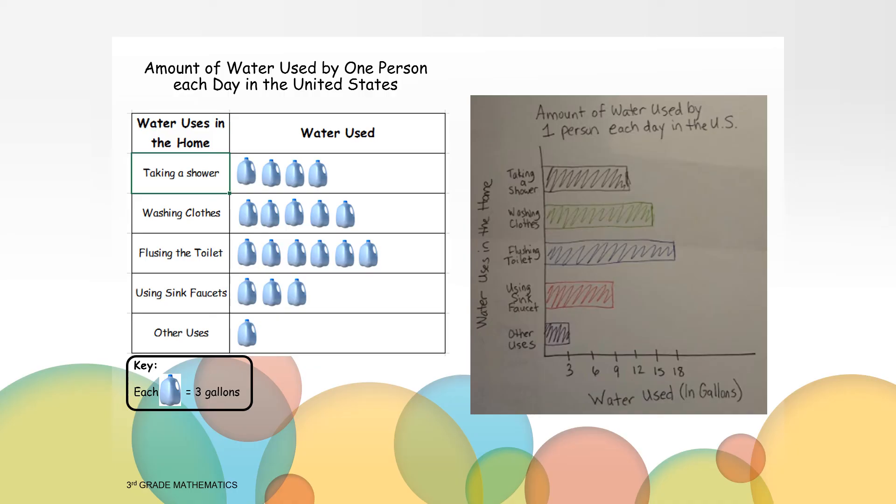Take a moment and compare the pictograph and the bar graph. How are they different? How are they the same? Write a few ideas down or share your ideas with someone that is home with you right now. I notice that they are the same because they share the same information. Also, the length of the bars are similar in length to the number of pictures in the pictograph. I notice that they are different because the bar graph uses bars and the pictograph uses a picture of the gallons of water.